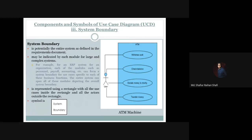Let's take a look at an example. For an ATM system, the system boundary is drawn using a rectangle shape, and the use cases are placed within it. The system boundary defines its own scope, and the particular module-related use cases are contained within that boundary.